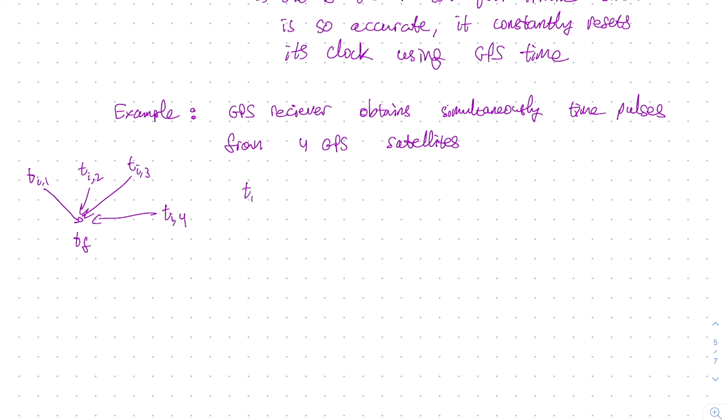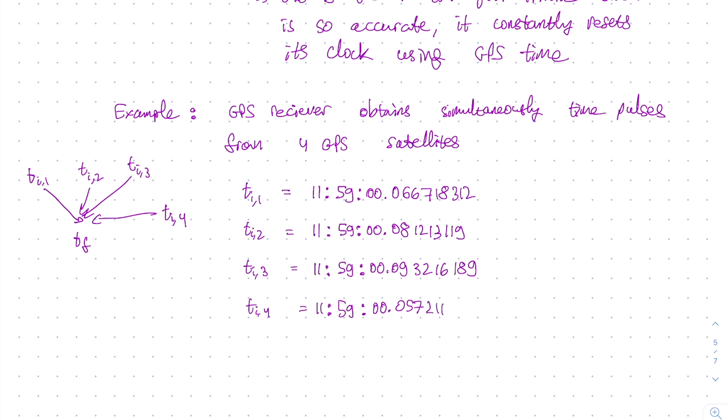And the pulses are received all at the same time t final. Now of course the problem is that we don't know t final super accurately. But we do have very accurate measurements of the four initial times. Suppose t initial 1 is 11:59:00.066718312 seconds. And similarly the pulse information for t initial 2, t initial 3, and t initial 4 are 11:59 and some number of seconds. And just to be clear, this notation goes like this. The leading number is the hours, next is the minutes, and then the seconds.